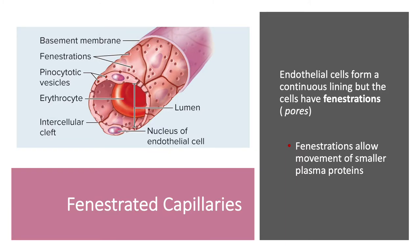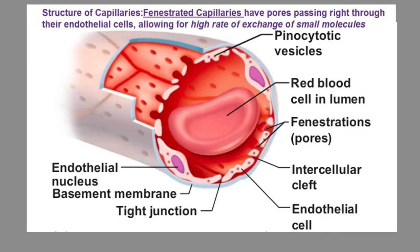Next up, we have the fenestrated capillaries. These also have a complete continuous lining of endothelial cells; however, they have little pockets or regions where those endothelial cells are extremely thin, called fenestrations. Fenestra means 'window.' These fenestrations allow the movement of smaller plasma proteins, making fenestrated capillaries more permeable than the continuous capillaries — those fenestrations increase permeability.